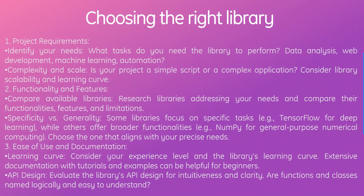Next, we have choosing the right library, which is the most difficult part. First, consider your project requirements — identify what tasks you need the library to perform, such as data analysis, web development, machine learning, or automation. Also consider complexity and scale: is your project a simple script or a complex application? Consider the library's scalability and learning curve. Then compare available libraries — research libraries addressing your needs and compare their functionalities, features, and limitations. Note the difference between specificity versus generality: for example, TensorFlow is specific to deep learning, while NumPy offers broader general-purpose numerical computing.